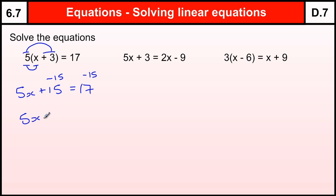So that gives me 5x. I've taken the 15 away from this side. I've taken 15 away from that side. It gives me 2. And then this is 5 times x. The inverse of 5 times is divided by 5. So I'm going to divide both sides by 5. 5 divided by 5 is 1. So that just gives me x on its own, 1 lot of x. And 2 fifths on this side.